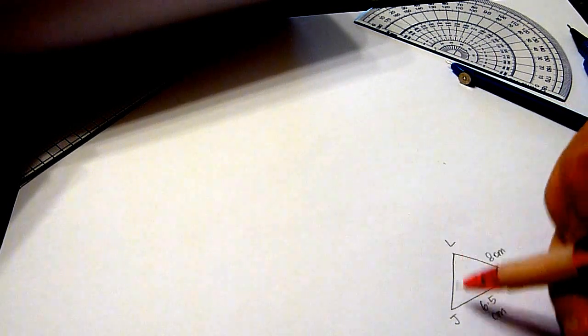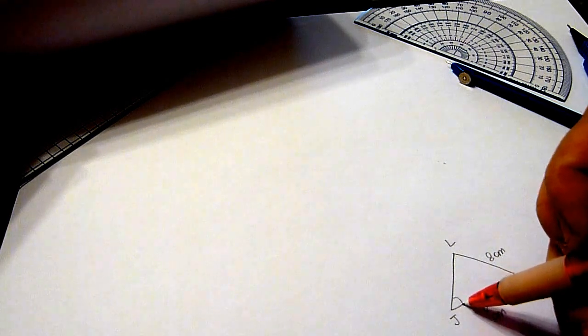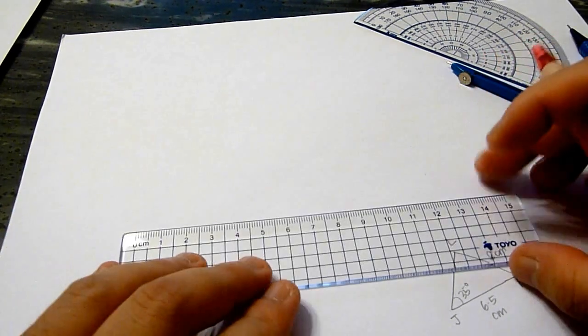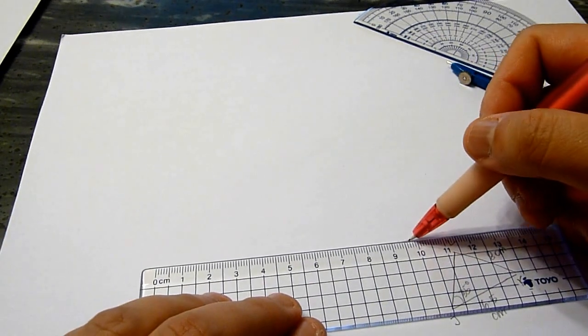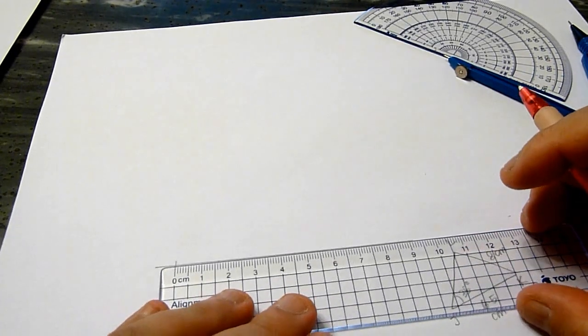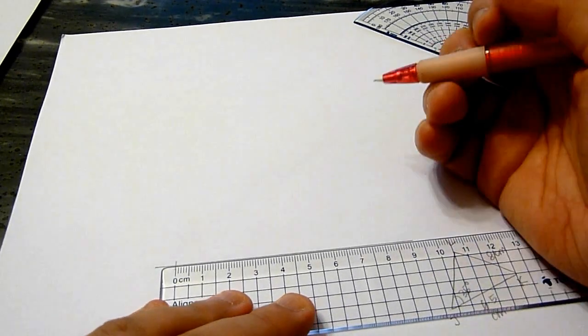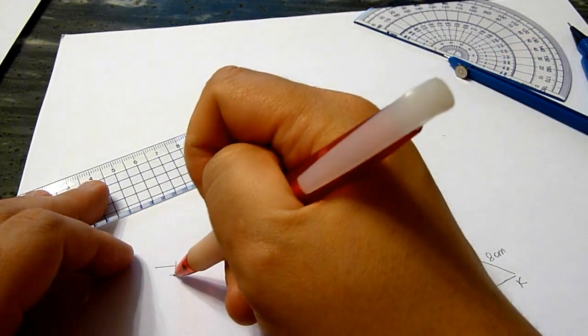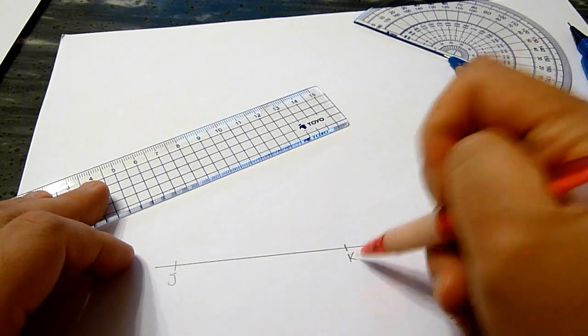Angle LJK is 35 degrees. Now, we shall draw the base of the triangle first, which will measure 6.5 cm. Mark the two points J and K on the line.